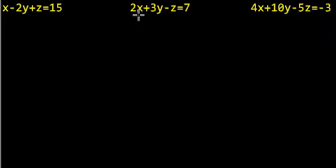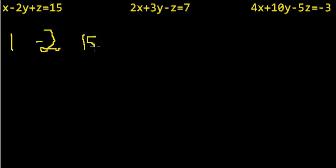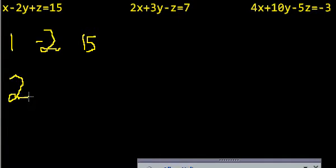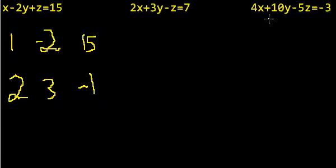The columns are x, y, z for each row. The first row of coefficients is 1, negative 2, 1. The second row is 2, 3, negative 1. The third row is 4, 10, negative 5. And the constants are 15, 7, and negative 3.